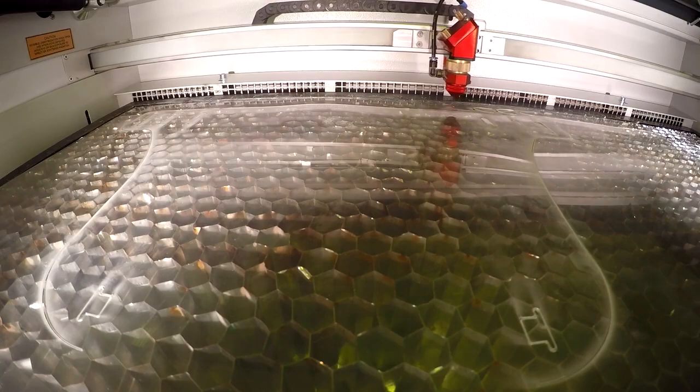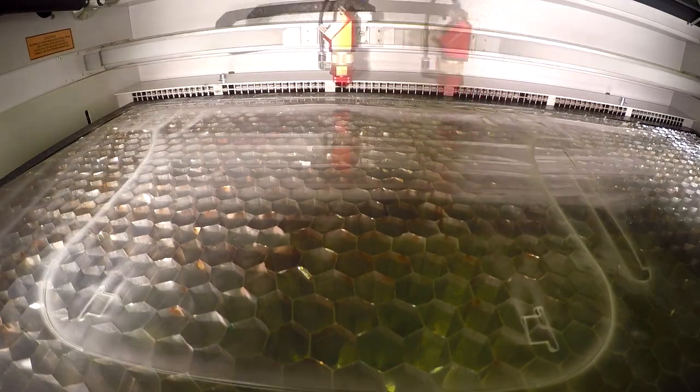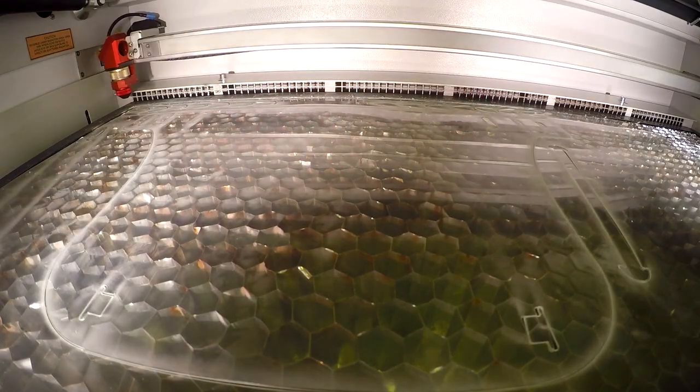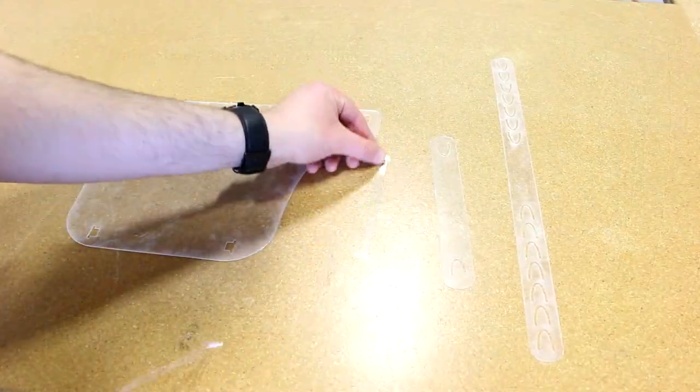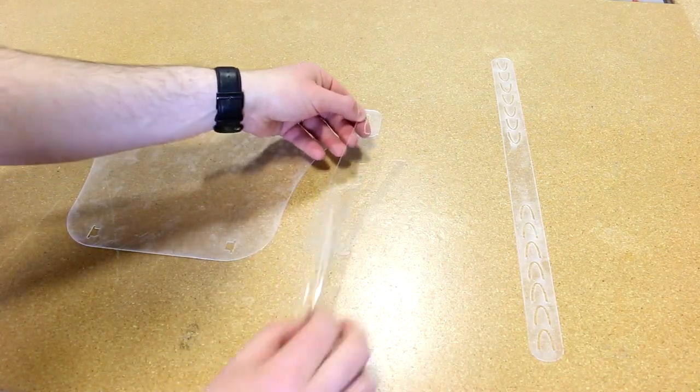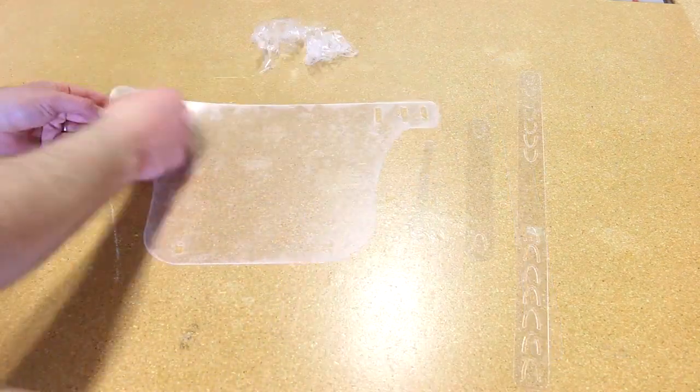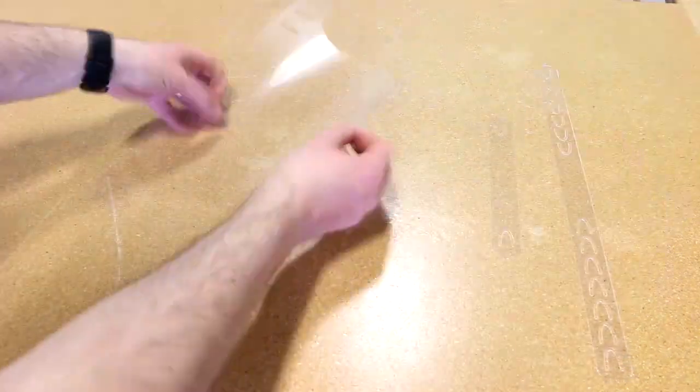This design was created with the 0.018 impact acrylic in mind in order to provide a thicker alternative to the typical 0.07 design. Once laser processing has completed, we then take the masking off both sides and assemble the pieces together.